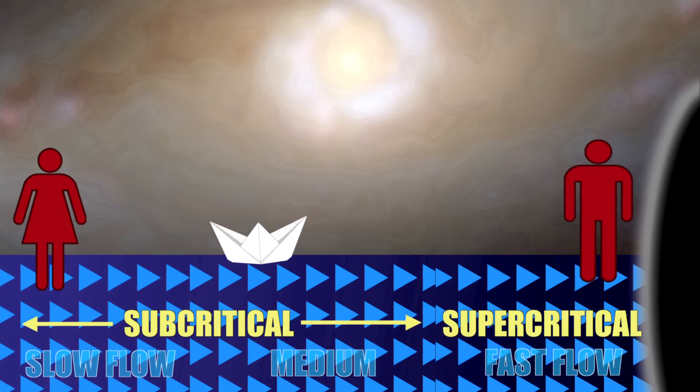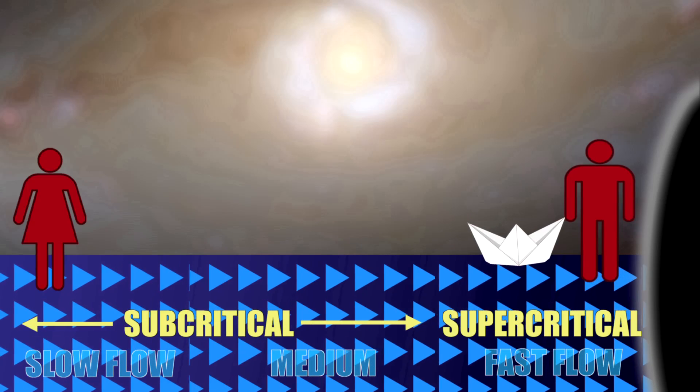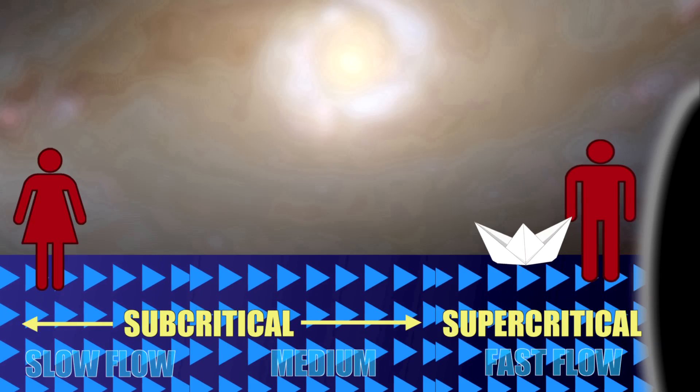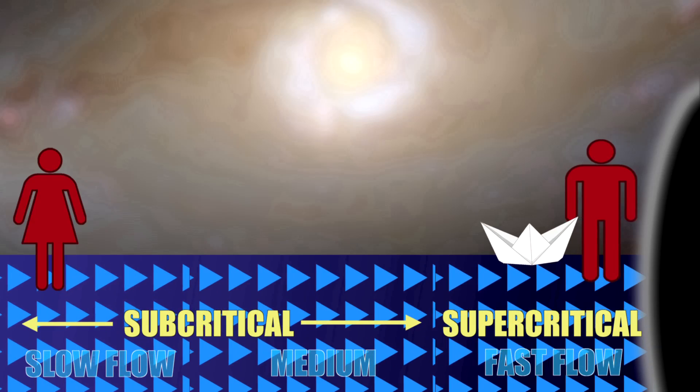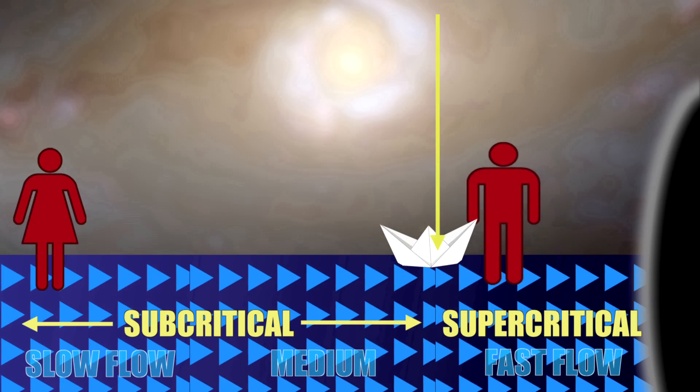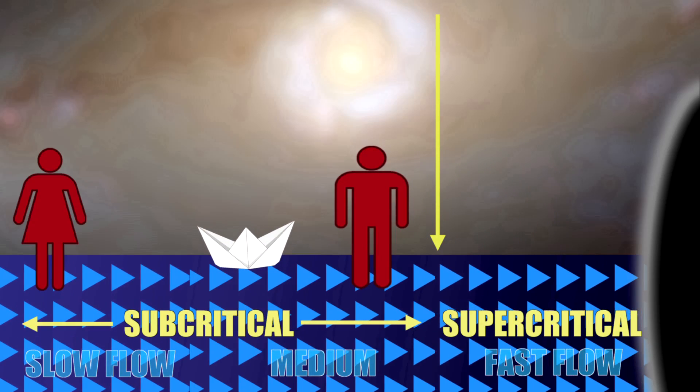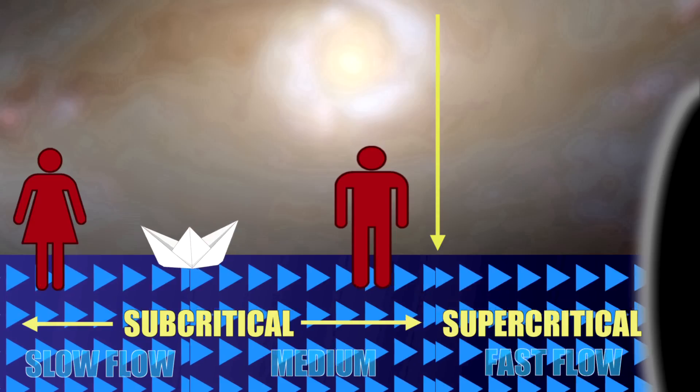Then I can send information to you downstream, but you cannot send any information upstream because the flow is faster going downstream so that nothing can counter-propagate. So in a region where exactly the two speeds, that's the perturbation speed of the little ripple on the surface, and the background flow are equal, that's your analog black hole horizon.